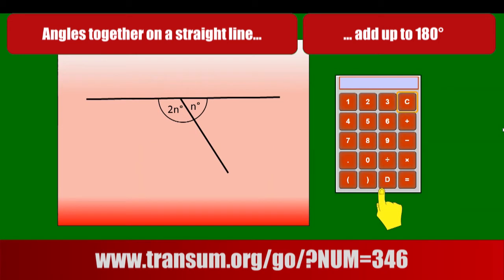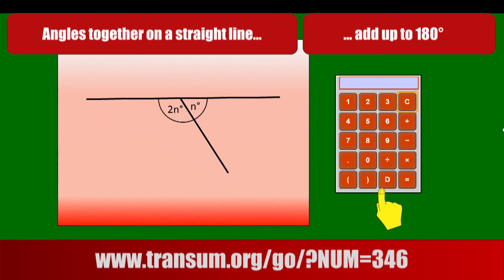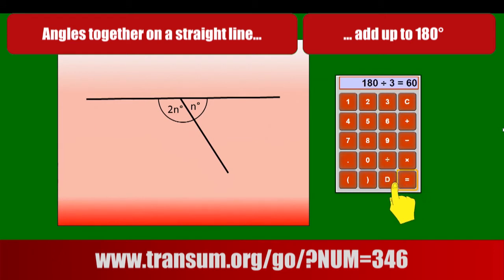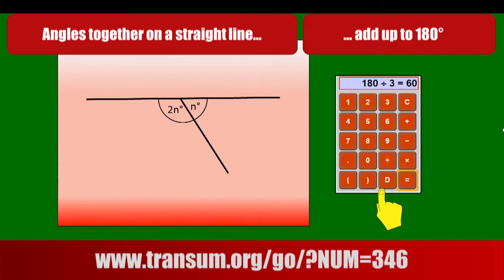The angles could both be underneath the straight line. They will still add up to 180 degrees. One of them is N and the other is twice as big — it's 2N. So altogether we've got 3N equals 180 degrees. If we take 180 degrees and divide it by 3, N must stand for 60. The angle on the right is 60 degrees, and the angle on the left is 2N, so that's 120 degrees.